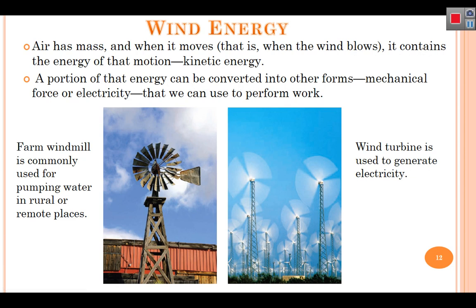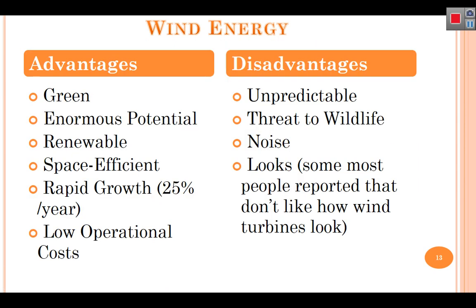Farm windmills are commonly used for pumping water in rural areas. Wind turbines connected to a generator are used to generate electricity. A collection of wind turbines together is called a wind turbine farm.